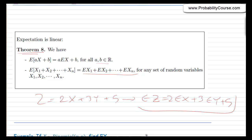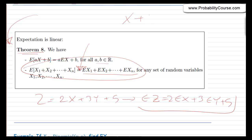This is a very useful theorem. Importantly, this is always true — x1, x2, x3, and so on do not have to be independent for this formula to hold. This is a very general formula. Whenever you have two random variables x and y, E[x+y] = E[x] + E[y], even if x and y are dependent.